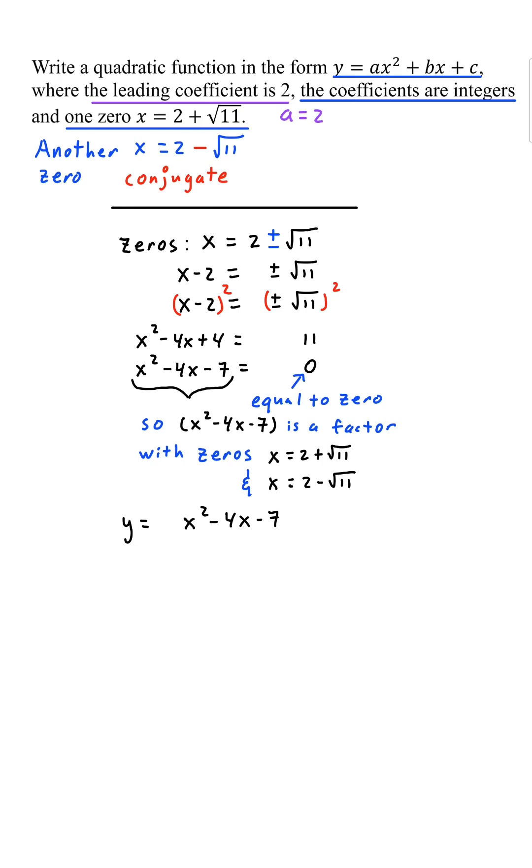We have y equals x squared minus 4x minus 7. But since we want a leading coefficient of 2, we're going to multiply by 2. Expand this out. We have y equals 2x squared minus 8x minus 14.